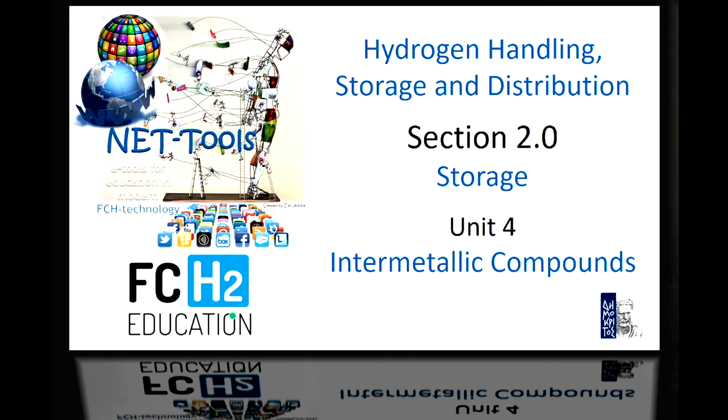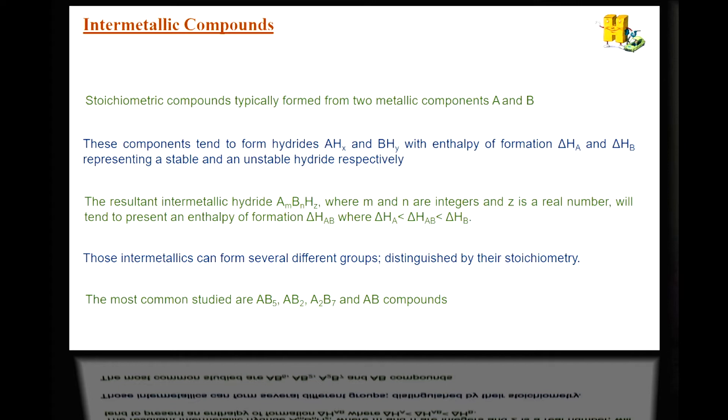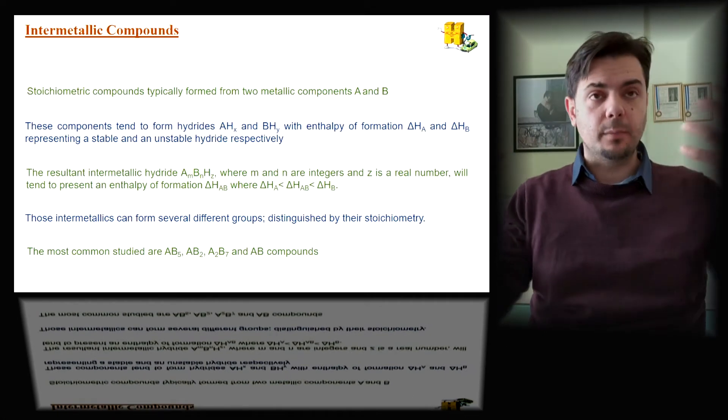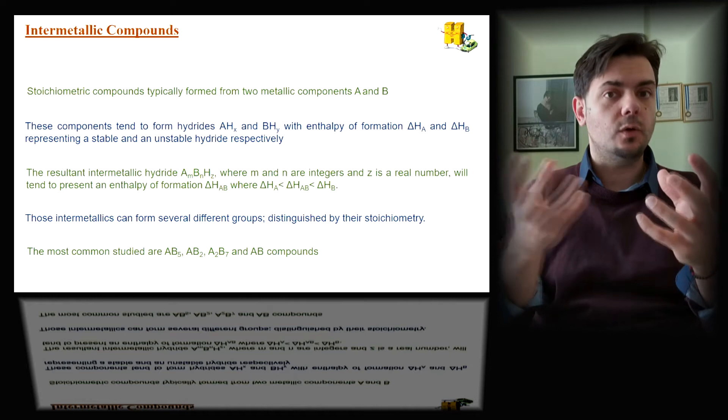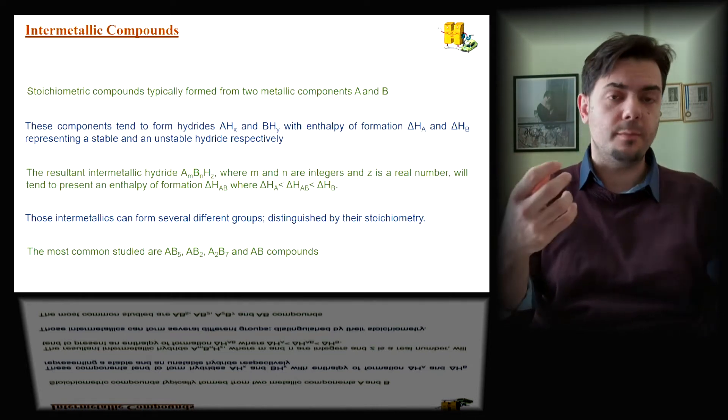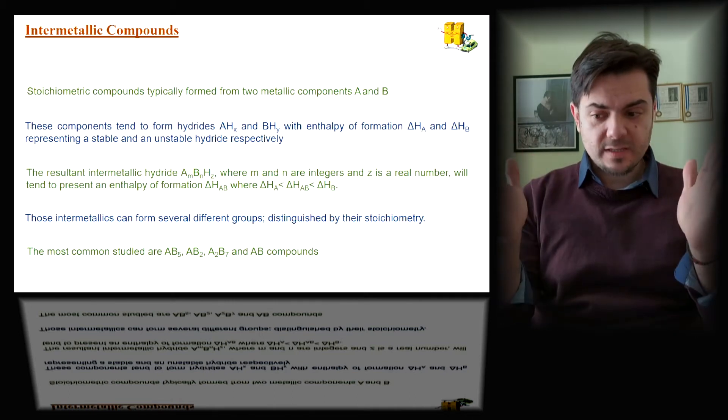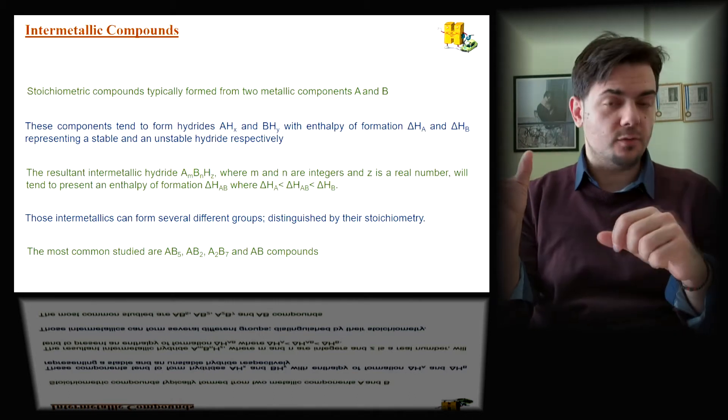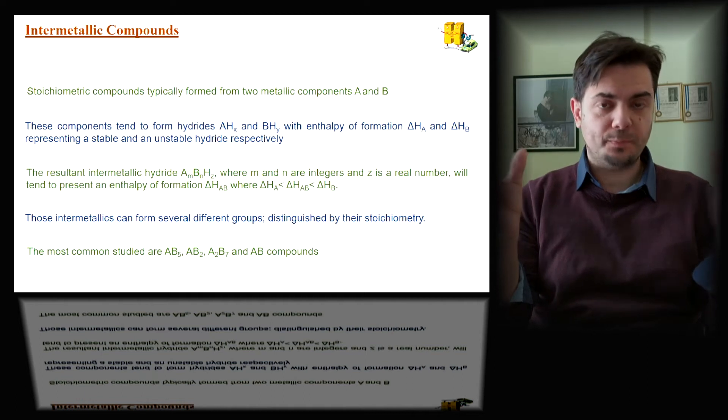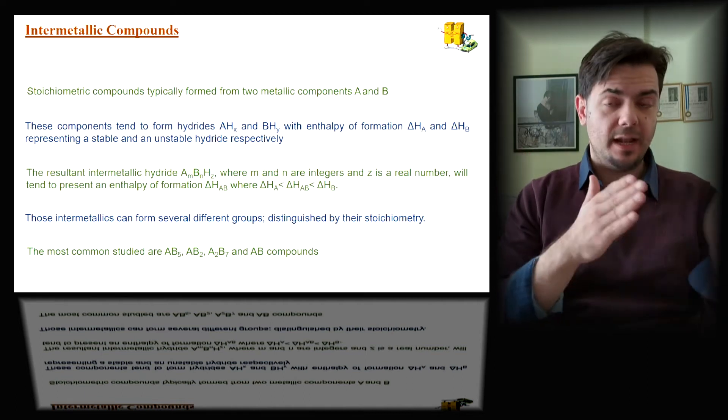So to begin with, what is an intermetallic compound? We're talking about some stoichiometric compounds that typically are formed by two metals, normally metal A and metal B. Both of these metals can form hydrides, so we have AHX, as you can see in the presentation, and BHY. One of these forms a fully stable hydride, one's an unstable hydride. Each of these hydrides has their own enthalpy of formation, ΔHA and ΔHB.